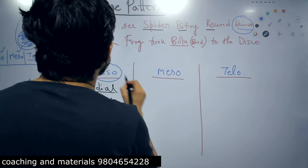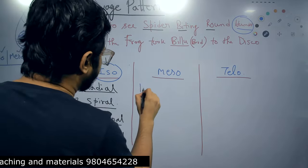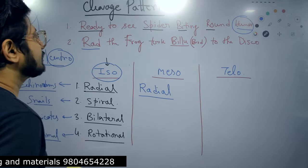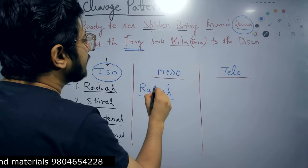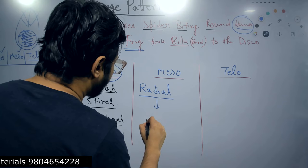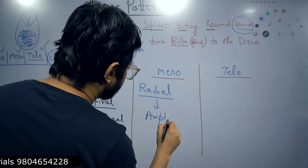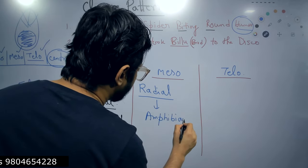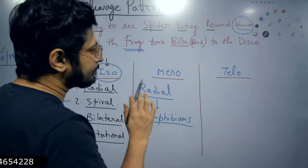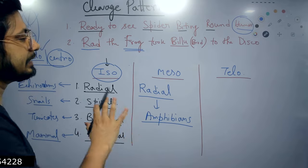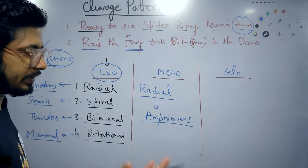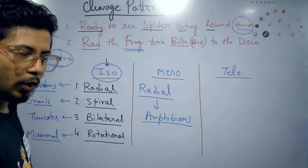Next are mesolecithal eggs. From the second sentence: 'Rad the frog' - 'Rad' again stands for radial cleavage, and 'the frog' tells us it is observed in amphibians. So for mesolecithal eggs there is only one pattern of cleavage visible - radial cleavage - observed in amphibians. Examples include frog and salamander.